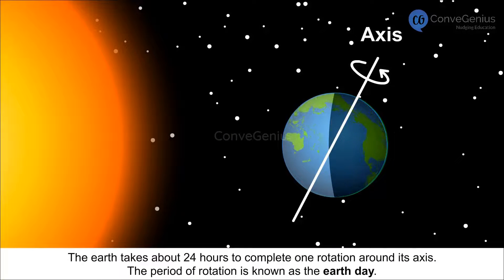The Earth takes about 24 hours to complete one rotation around its axis. The period of rotation is known as the Earth Day. This is the daily motion of the Earth.